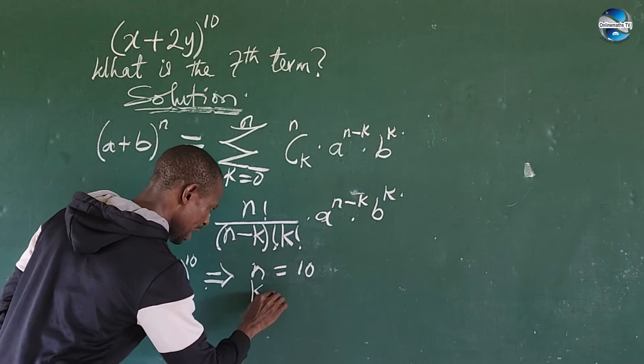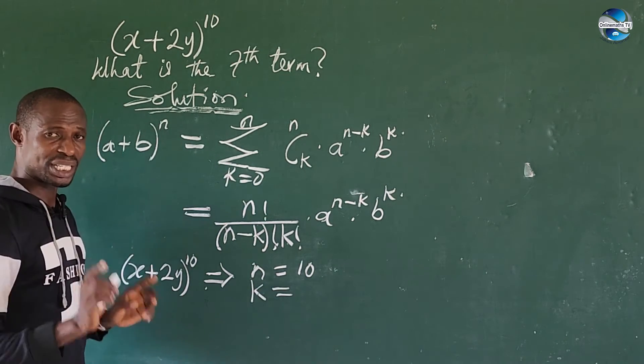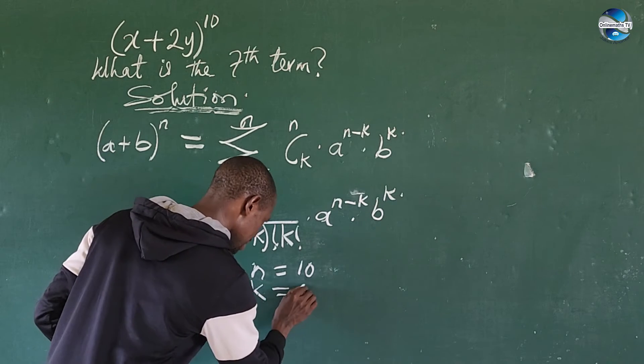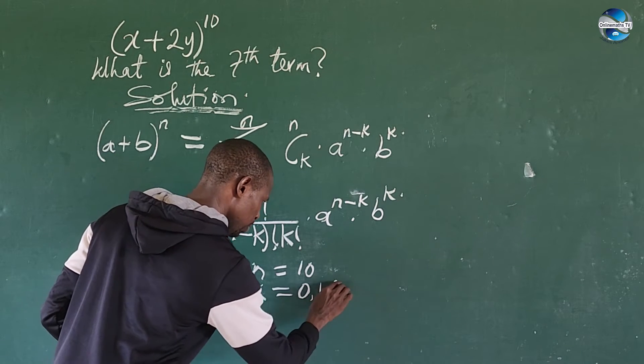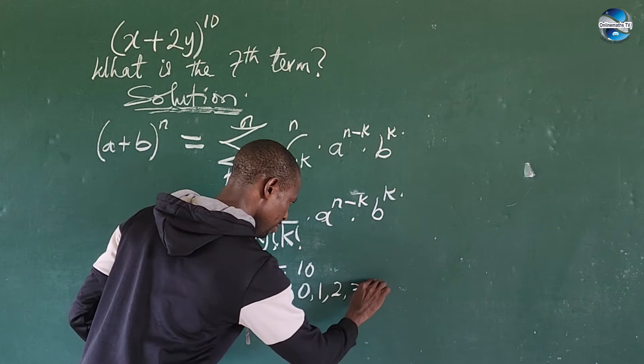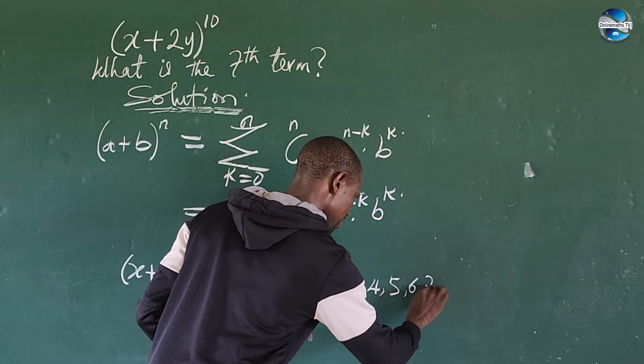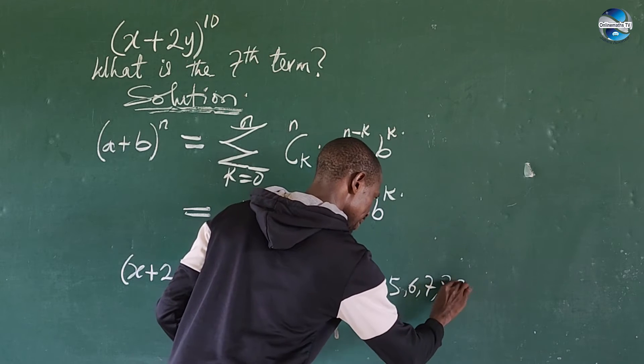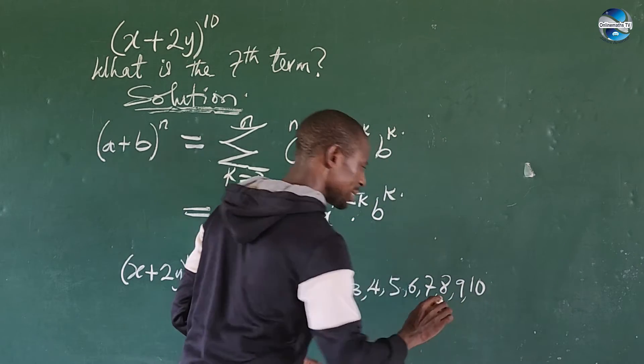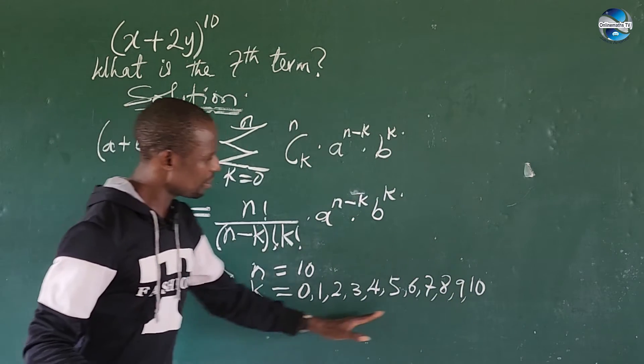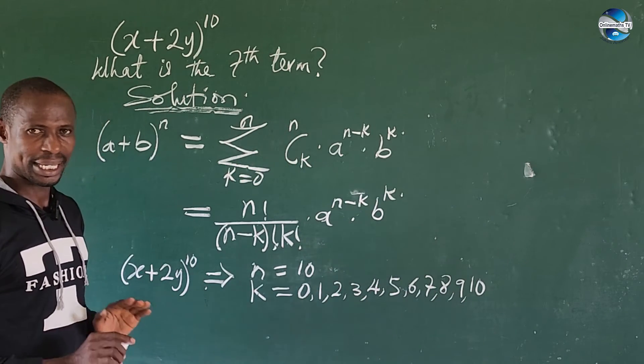Then what is our k? Our k will start from 0. So we have here 0, 1, 2, 3, 4, 5, 6, 7, 8, 9, 10. So these are the values for our k.